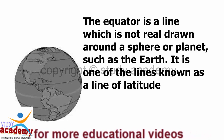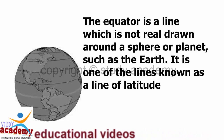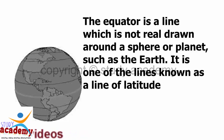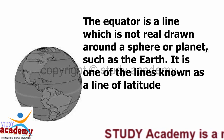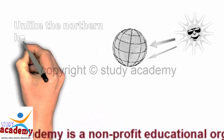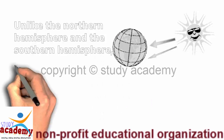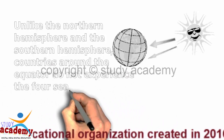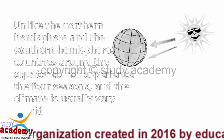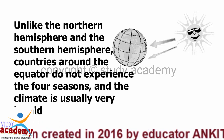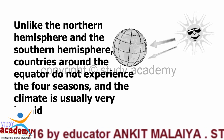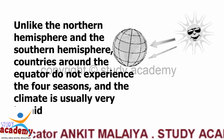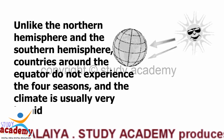The equator is an imaginary line drawn around a sphere or planet, such as the Earth. It is one of the lines known as a line of latitude. Unlike the Northern Hemisphere and the Southern Hemisphere, countries around the equator do not experience the four seasons, and the climate is usually very humid.